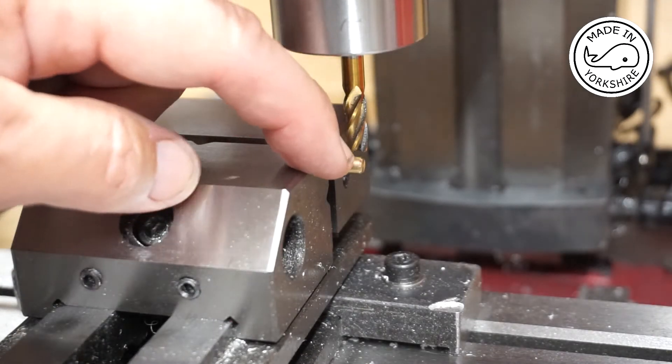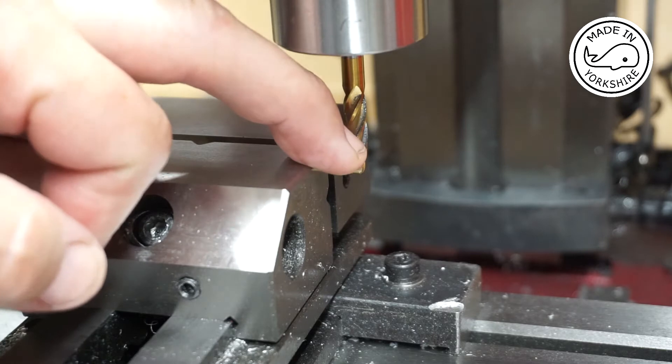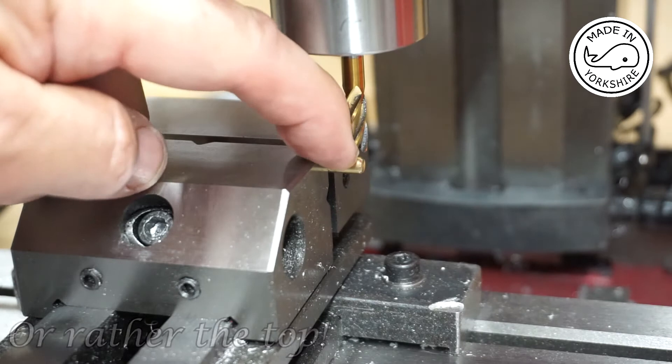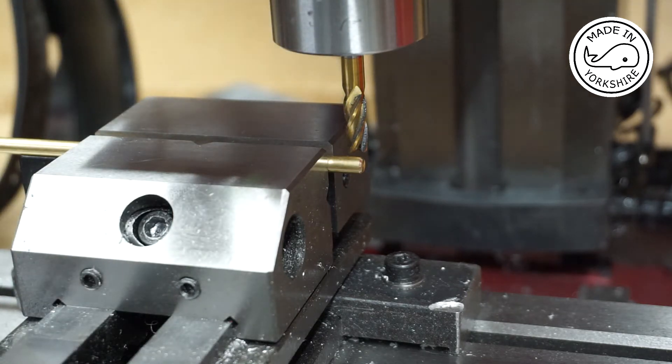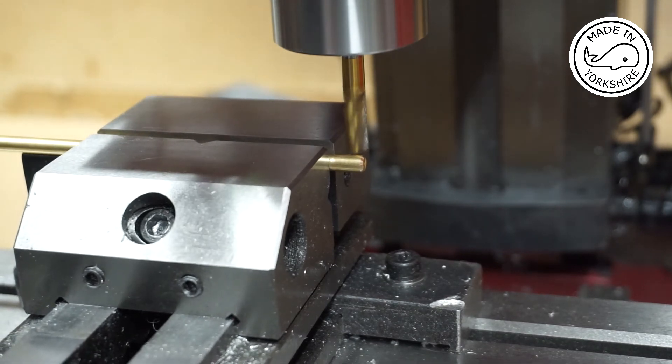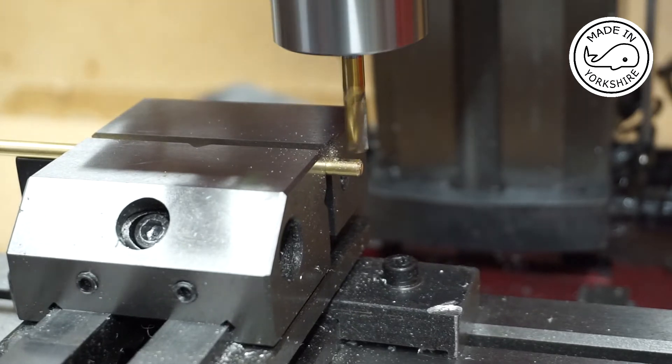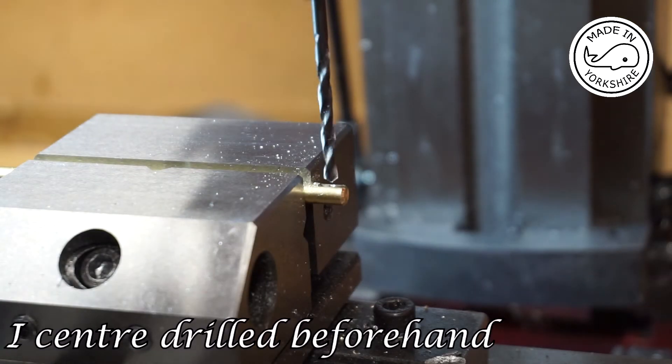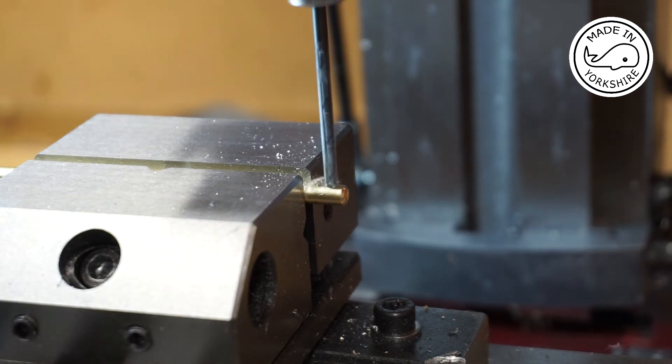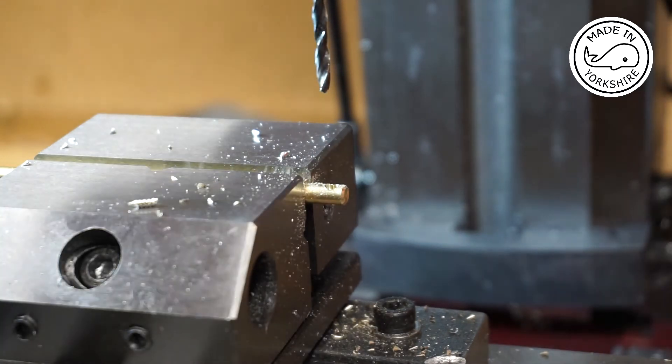So to drill an eighth of an inch hole centrally through this piece of brass rod, Tubal Cane, aka Mr Pete 222, suggests that you just take a little bit off the side using an end mill and then that helps you get the center. So I'll give it a try. We're going to remove 10 thou. That seems to work okay.